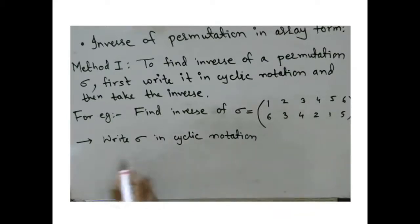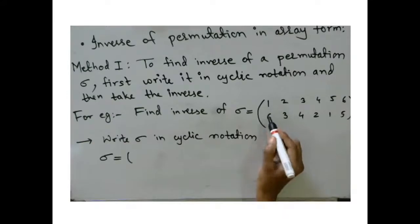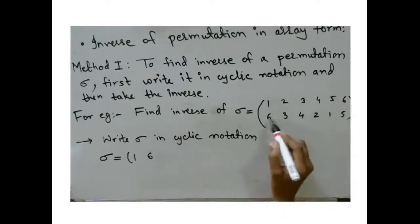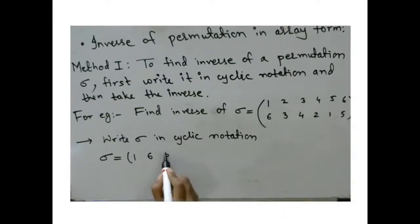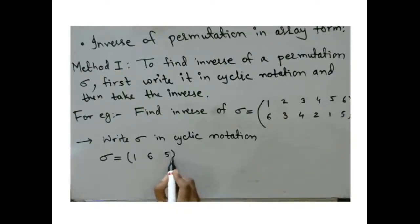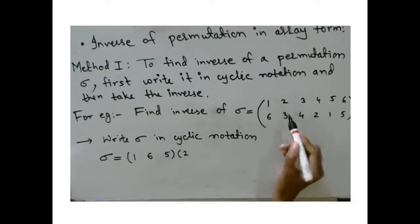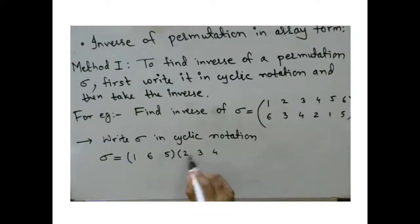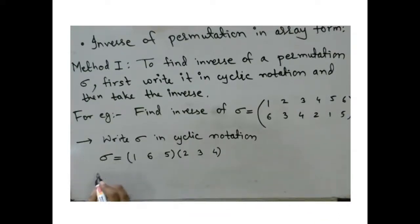1 maps to 6, 6 maps to 5, and 5 maps to 1, so we close the cycle there. Then start the second cycle with 2: 2 maps to 3, 3 maps to 4, 4 maps to 2, so we close that cycle. This gives the cyclic notation of sigma.